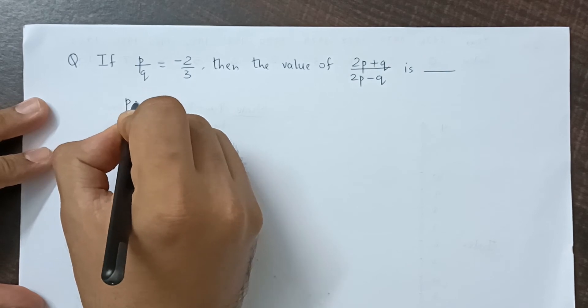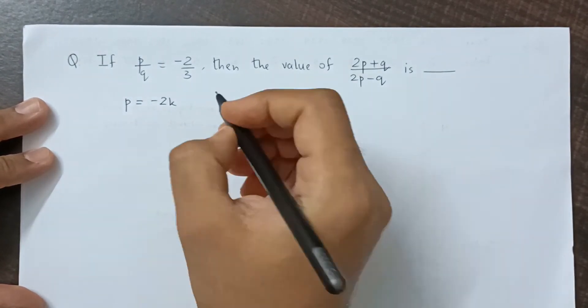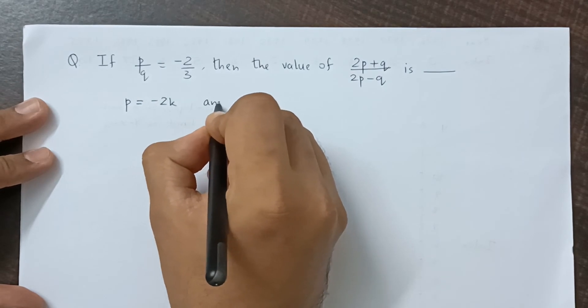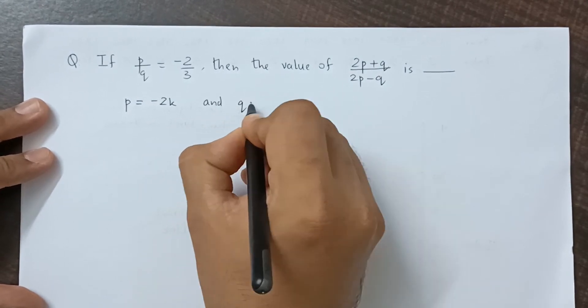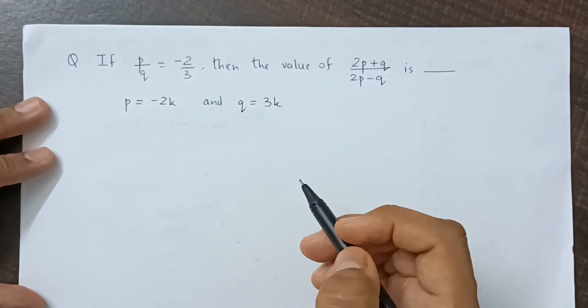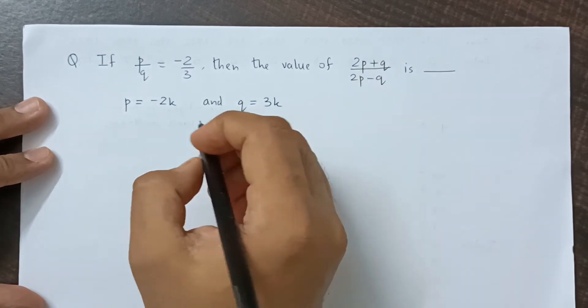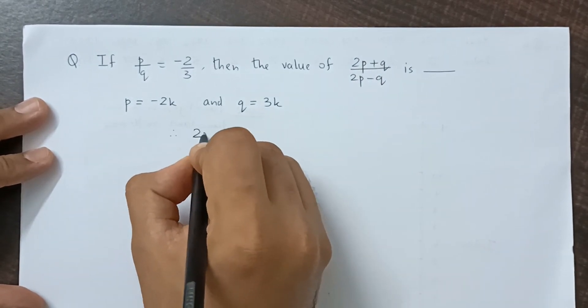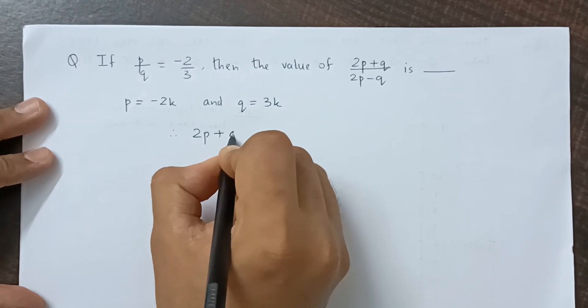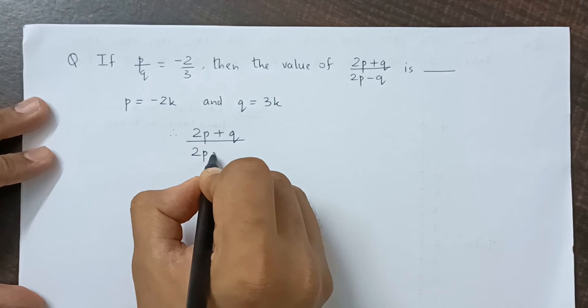We could say p is equal to minus 2k and q will be equal to 3k, where k is the common multiple. Now we can substitute these values in this expression.